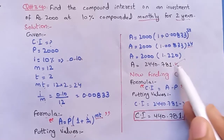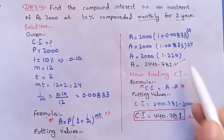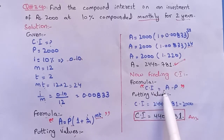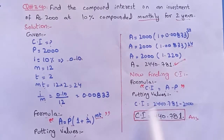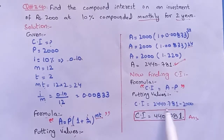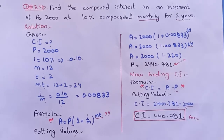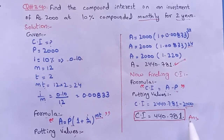Now we can easily find compound interest. Formula: Compound Interest = A − P. Putting in values: CI = 2,440.781 − 2,000. So compound interest is equal to 440.781. That is our answer.